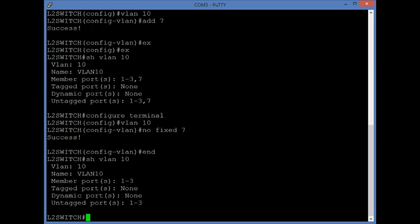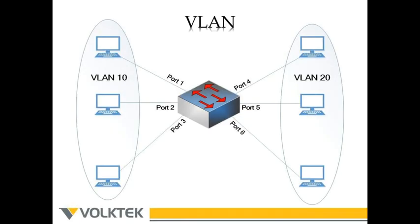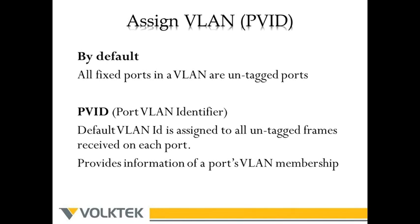Even though all hosts are in one physical network, they are logically divided into separate networks by VLANs. In a VLAN, all member ports are untagged by default, meaning packets received on these ports do not carry information identifying which VLAN they belong to. By assigning a PVID — the port VLAN identifier — to a port, you tell the packets which particular VLAN to connect to.